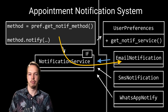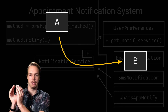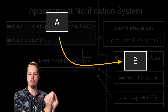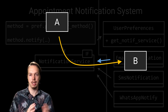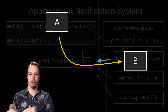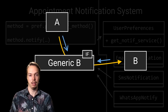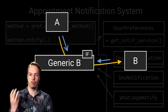The dependency inversion principle states that if we want to protect component A against changes in component B on which it depends, we should make sure that we invert the source code dependency against the flow of control. We do this by introducing an interface, such that A no longer needs to depend on the concrete component B.